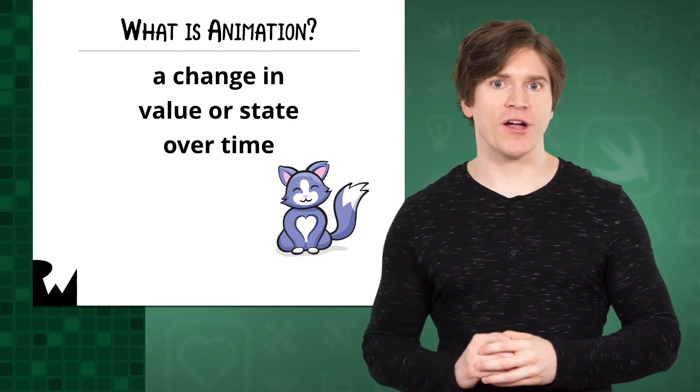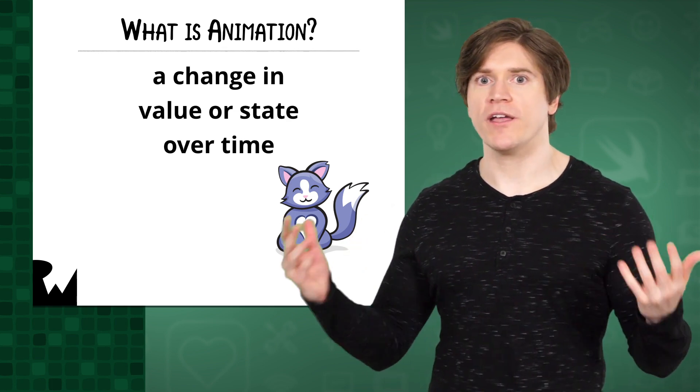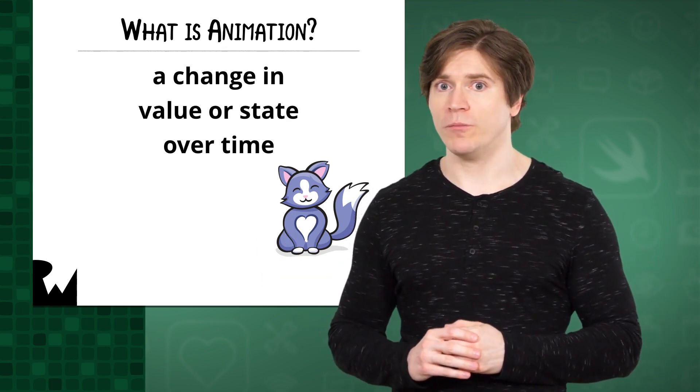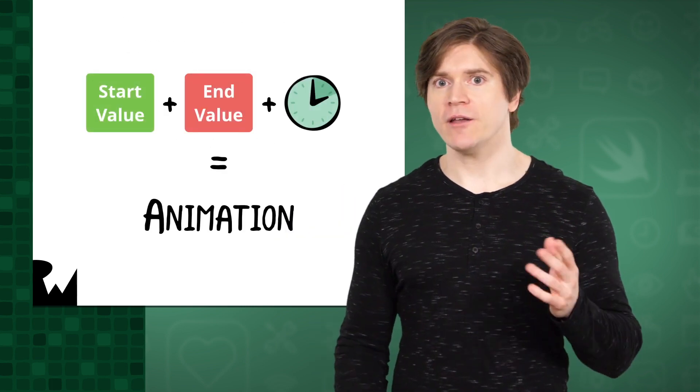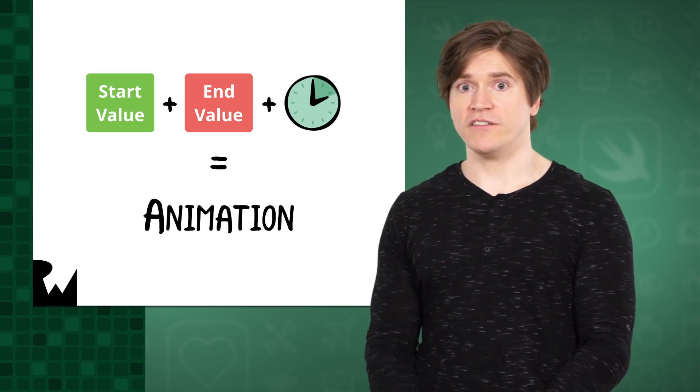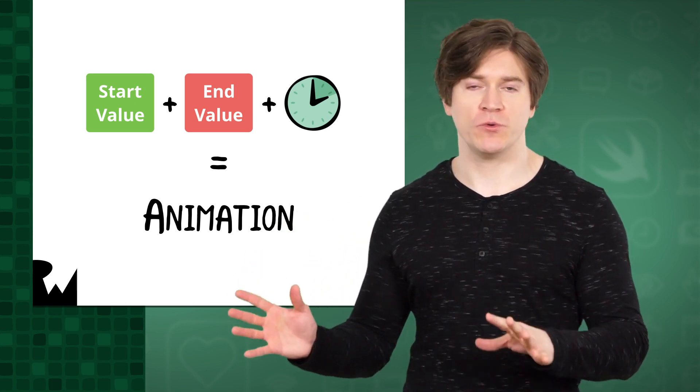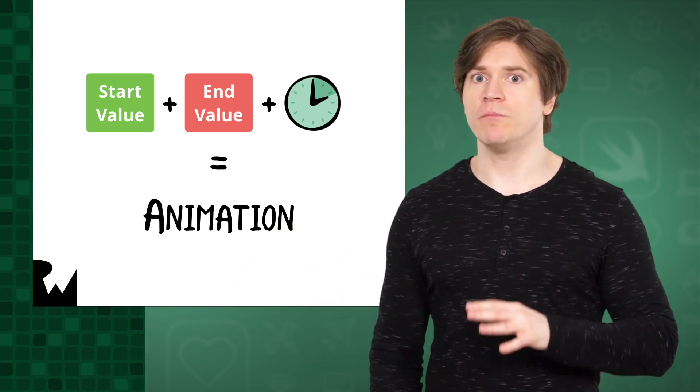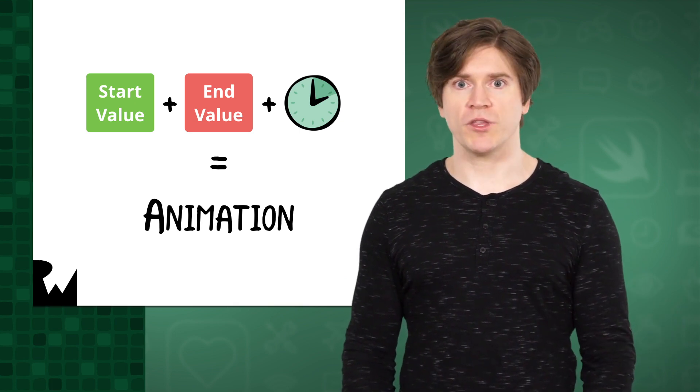Position is an easy property to think about animating, and when you're animating constraints, much of it will be position-based. For every animation you create in this part, consider what the starting value is, what the ending value is, and how long it should take to change between those two values. There will be bells and whistles to add, but start with the basics.